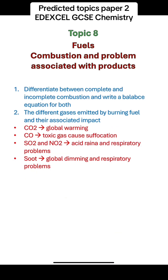Combustion and the problems associated with products from burning: you should be able to differentiate between complete and incomplete combustion and write a balanced equation for both. Complete combustion occurs in the presence of excess oxygen, and the products are only carbon dioxide and water. Incomplete combustion occurs in the absence of enough oxygen, producing carbon monoxide, as well as carbon dioxide, water, and possibly soot or carbon particulates. Carbon dioxide causes global warming, carbon monoxide is toxic and causes suffocation, sulfur dioxide and nitrogen dioxide cause acid rain and respiratory problems, and soot causes global dimming and respiratory problems.